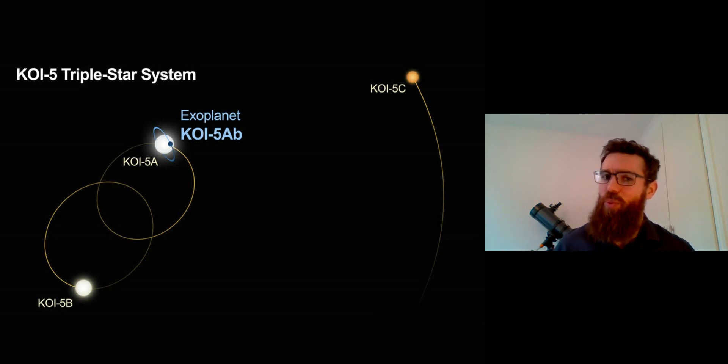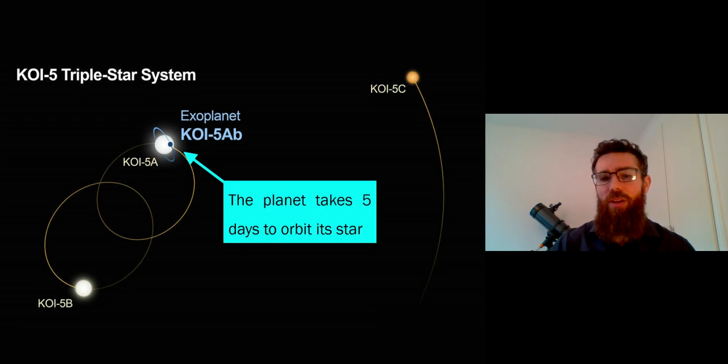Let's imagine what the orbit would look like of just a planet in that system. So the planet itself takes about five days to orbit the star that it's actually on an orbit around. So it's on a fairly close orbit, relatively close to that particular star. Five days for one orbit is not a very long time.